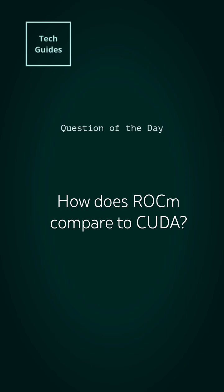CUDA is sort of the leader in GPU computing, but it's only proprietary to Nvidia. If you have an AMD graphics card, you're going to have to use ROCm, which is trying to compete with CUDA for GPU computing. If you're interested in training AI and deep learning models, you're going to want to learn CUDA or ROCm if you have an AMD graphics card.